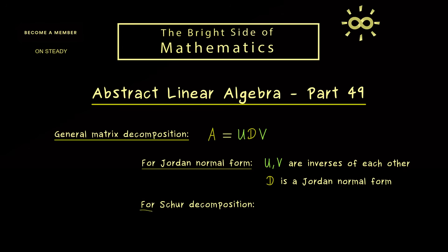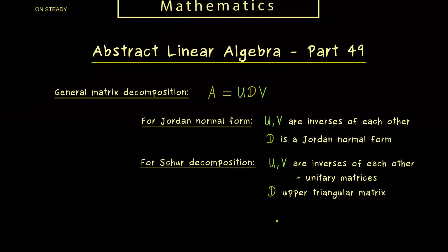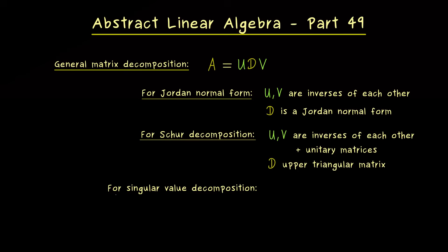So you know this was an important matrix decomposition, but we also have discussed other ones, for example the Schur decomposition. This one looks similar, but we even have a stronger connection between U and V. There are still inverses of each other, but there are also unitary matrices, so the inverse is just given by the adjoint. This makes the Schur decomposition even nicer, because it says that the two matrices A and D are unitarily similar. However, the price to pay for that is that D is in general far off from a diagonal matrix. In fact, we can only say that D is an upper triangular matrix.